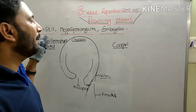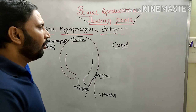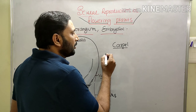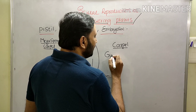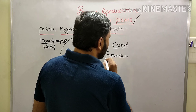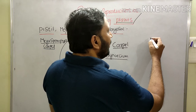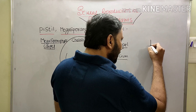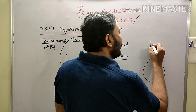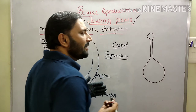Now our discussion is about Pistil, or Carpel. The male reproductive organ is androecium; the female reproductive organ is called gynoecium. The gynoecium is made up of carpels. Each carpel has three parts: a basal swollen part, a middle elongated part, and an apical part.